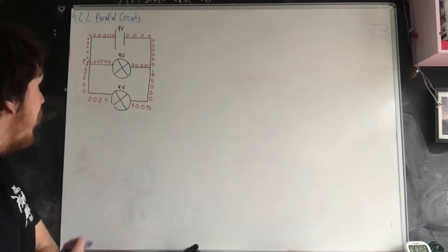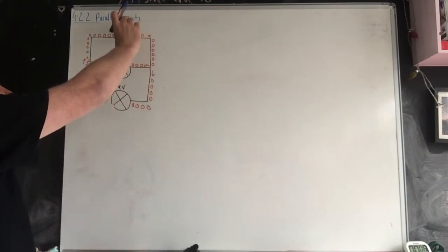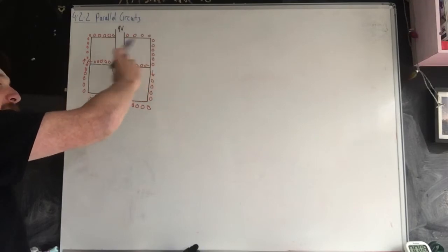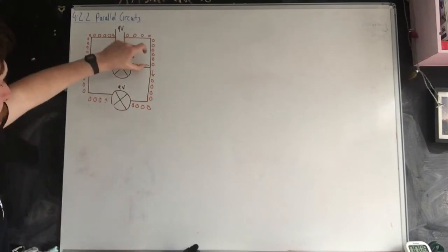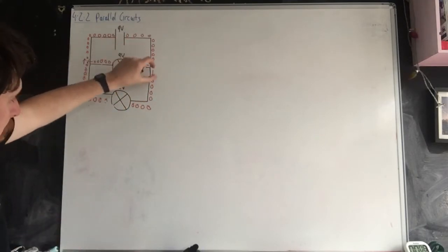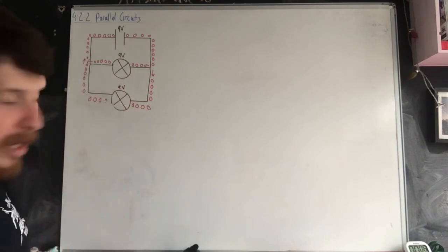However, something to take into account is these electrons are travelling around a circuit in a certain amount of time. The amount of electrons that go down here and the amount that go down here means that the current has to split.